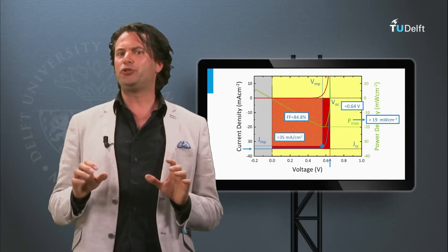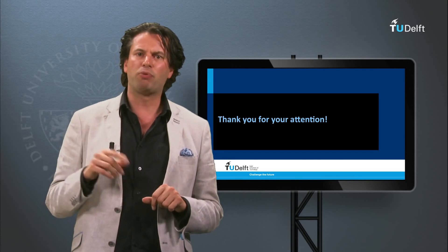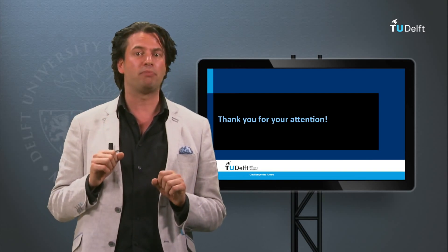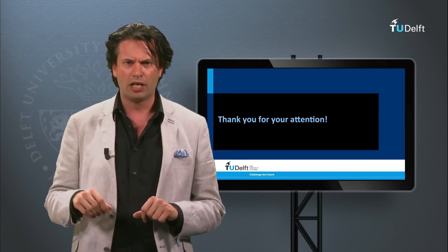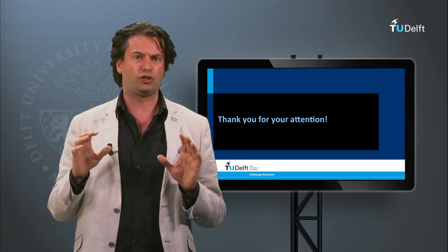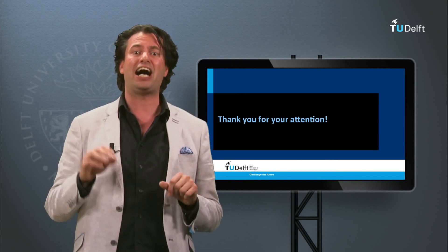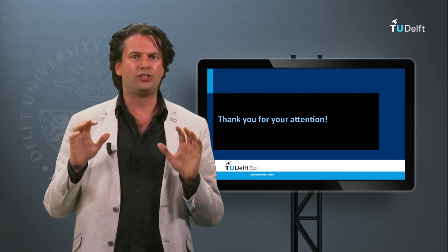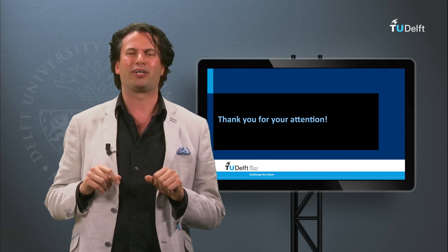We have introduced the external parameters of an ideal solar cell. In the next block we will show a video on how a real JV measurement of a solar cell in the Delft Solar Lab is performed. We will see that the JV curve of real solar cells and solar panels does not perfectly match the JV curve of an ideal solar cell. What is the origin of all these non-idealities? This question will be answered in the next block.